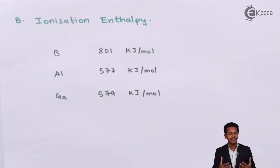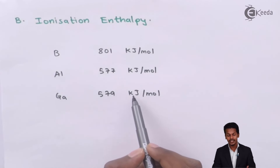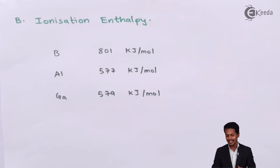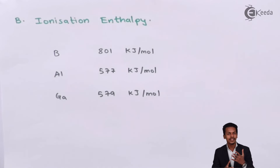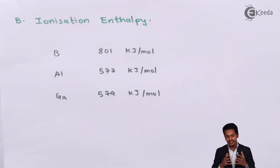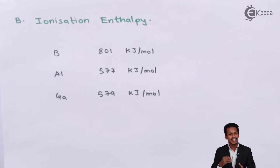Gallium has 579 kJ/mol, which is slightly higher than Aluminium's 577 kJ/mol. This is because of the size: Gallium has an atomic size of 135 pm, which is smaller than Aluminium. The electron in the valence shell of Gallium is more attracted towards the nucleus, so it is more difficult to remove that electron, and that is why the ionization enthalpy increases slightly for Gallium.